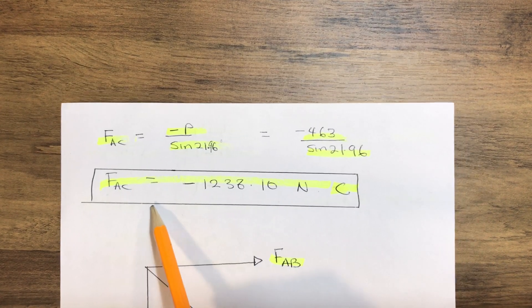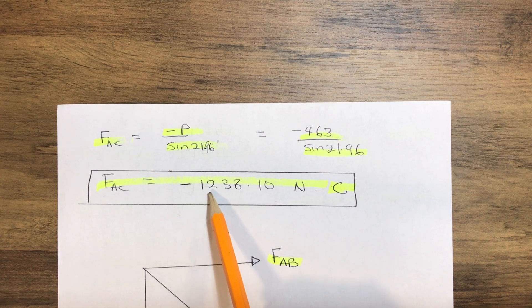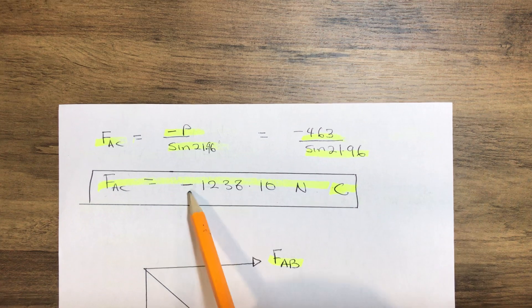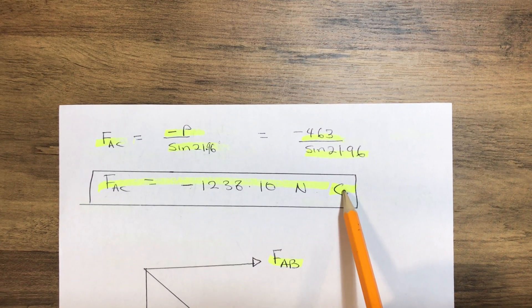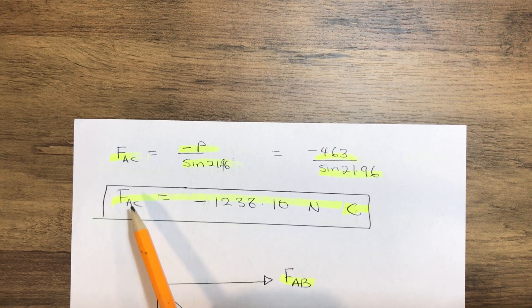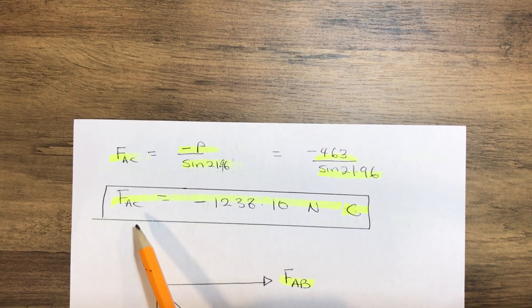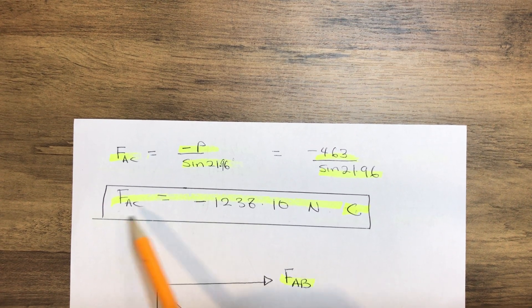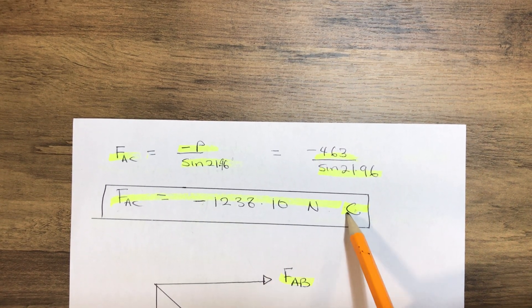So therefore FAC equals minus 1238.10 Newton. The fact that it is having negative shows that it is compression. So therefore our FAC is acting instead of out of the joint, it is acting towards the joint, so that shows that it is compressive.